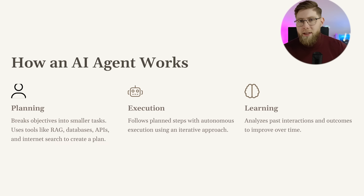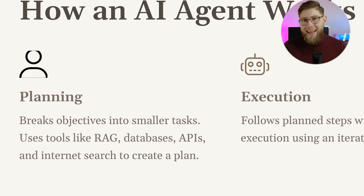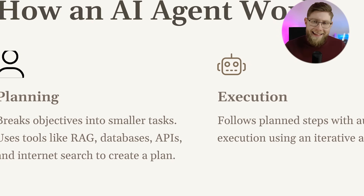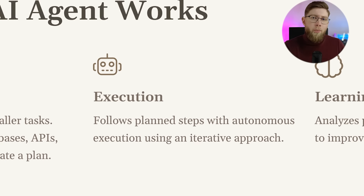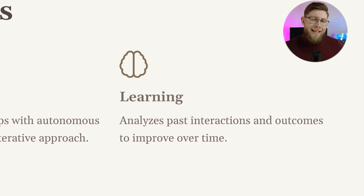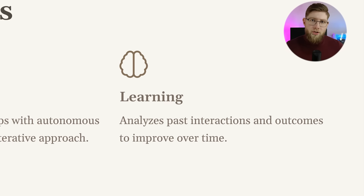Now we understand the differences between out-of-the-box large language models and AI agents. Let's see how an AI agent works under the hood. Three key points: one, planning — an AI agent can design its own plan based on the goal, decompose the task into subtasks, and plan its own actions. Second, it can execute — it can perform those steps and subtasks, and it can do that in iterations, meaning if it fails, it can try again and redesign its own strategy until it reaches the final goal. And then lastly, learning — it learns from past interactions and experiences, and can adapt its own behavior based on that, so it is constantly improving.